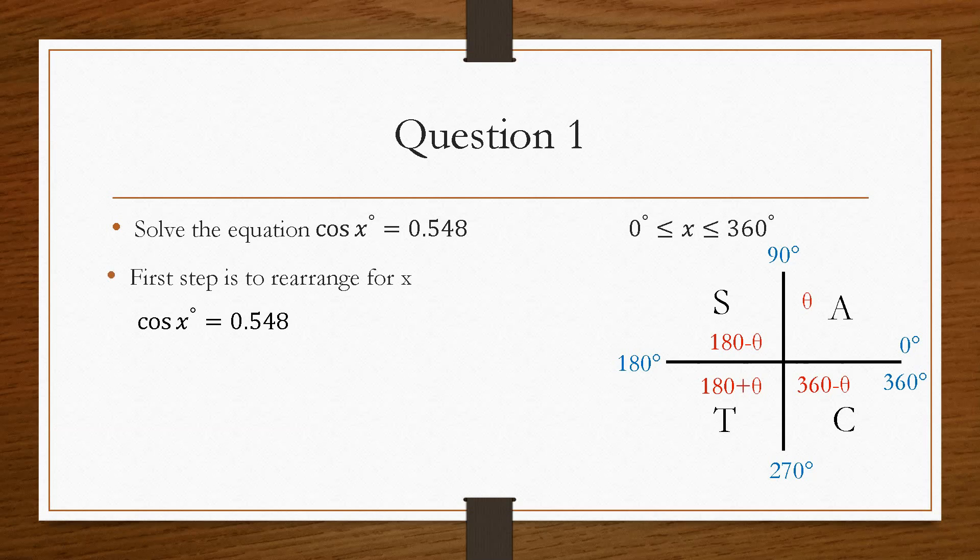Now, when the cos goes over, it doesn't go over as divide because technically it is multiplying the x. But with trigonometric functions, you take it as inverse cos. So that is written as cos to the minus 1. And the way that you get that in the calculator is by pressing shift and then cos. And that will give you cos to the minus 1. And then if you put that into the calculator, cos to the minus 1 of 0.548, that will give us an angle of 56.8 degrees.